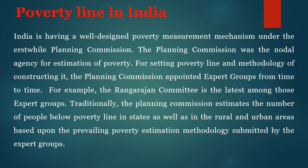The poverty line in India has a well-designed poverty measurement mechanism under the supervision of the Planning Commission. The Planning Commission was the nodal agency for estimating poverty. For setting the poverty line and methodology of constructing it, the Planning Commission appointed expert groups from time to time. For example, the Rangarajan Committee is the latest among those expert groups. Traditionally, the Planning Commission estimated the number of people below the poverty line in the states as well as in rural and urban areas based upon the prevailing poverty estimation methodology submitted by the expert group.